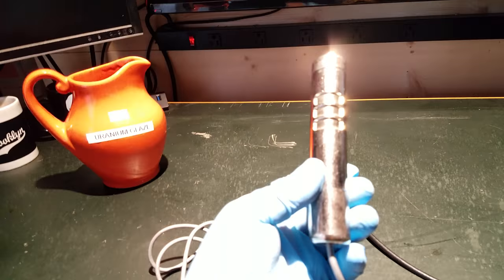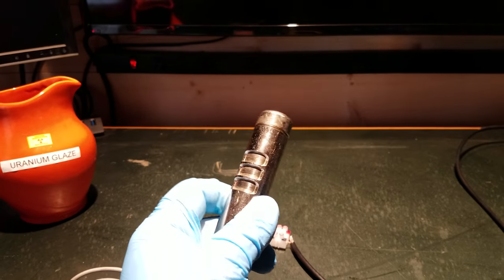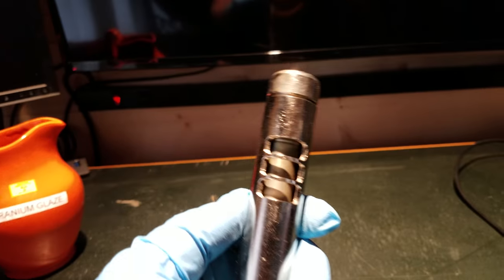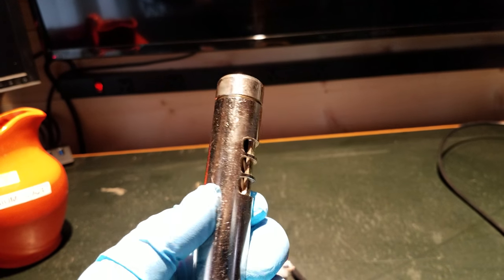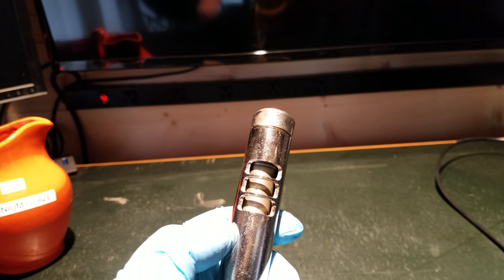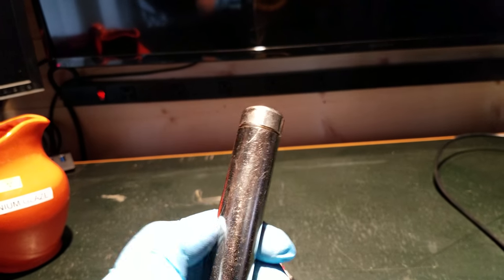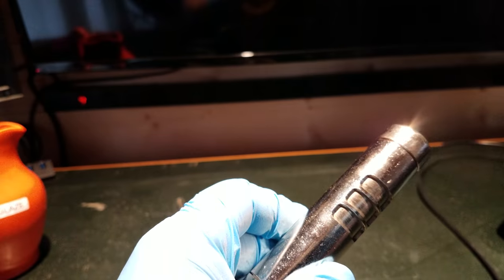But in the meantime, I did manage to track down a probe from a CDV-700 Geiger counter with a nice beta shield. When it's open like this, beta particles are allowed to pass through. When it's closed like that, they are not.